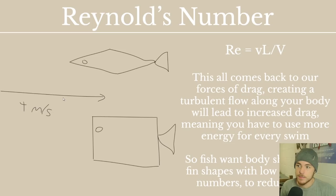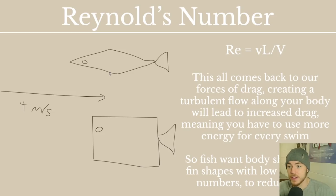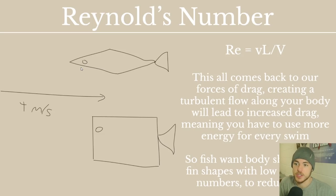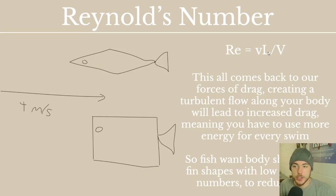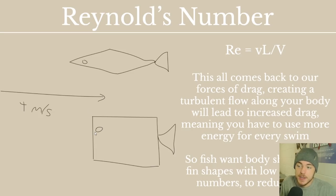For example, with my drawing of a diamond fish versus a box fish: if both fish are moving at four meters per second, the velocity is stable, and they're moving in the same substance, so viscosity is the same. The only variable that's changing is the length — the length of the fish that is actually hitting the water. On the diamond fish, just a little nose is hitting the water, whereas on the box fish, there's a very large surface. Because length is in the numerator of the equation, you'll get a larger Reynolds number for the box fish. The diamond fish has a low Reynolds number — more laminar flow, less energy needed to swim — while the box fish at the same speed has more drag and needs more energy.